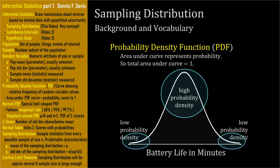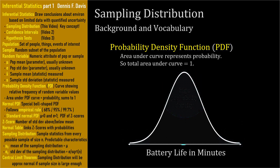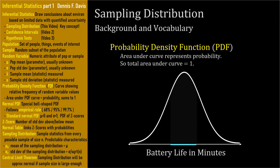Since a PDF depicts probability, the total area under a PDF curve is exactly 1. The probability of observing random variable values in a particular range on the horizontal axis equals the area under the curve between those two points, because that's the proportion of the population between those points.